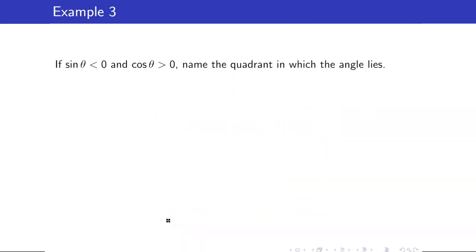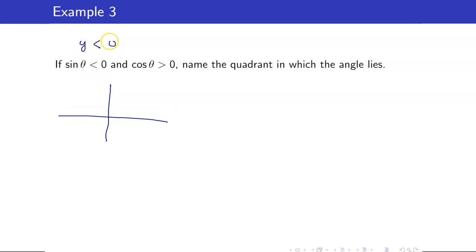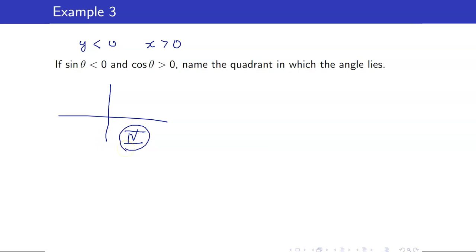For example: if sine theta is negative and cosine is positive, name the quadrant. Sine negative means y is negative; cosine positive means x is positive. Therefore, the angle lies in quadrant 4.